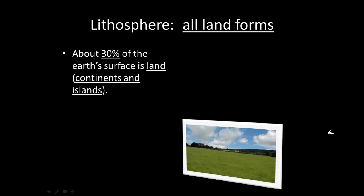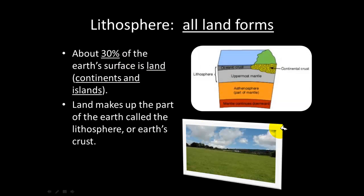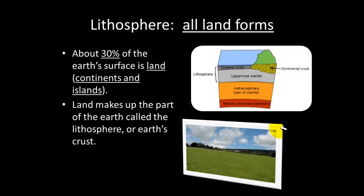And when I say land, I mean things like the continents and islands. And taking a look at this graphic, it will show you, this is an example of what we mean by land, places that human beings live on. It is only about 30% of the Earth's surface is actually made up of land. Now, land makes up the part of the Earth called the Lithosphere. And what Lithosphere actually means is the Earth's crust.